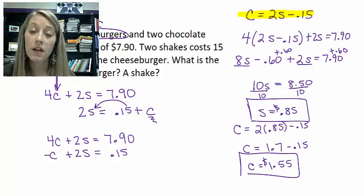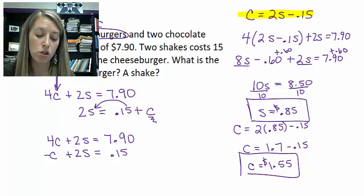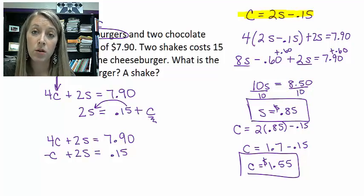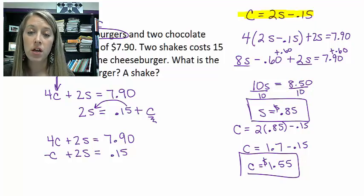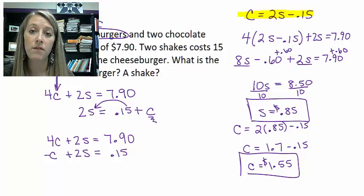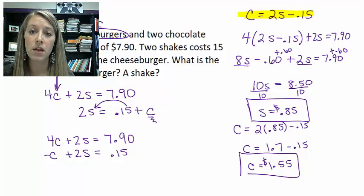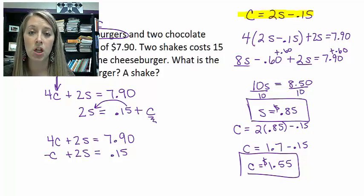If you want to make sure your math is correct, you can substitute these values back into the original equation or put them back into the word problem to see if they make sense — and they do in this case. So our final answers are: a shake costs $0.85 and a cheeseburger costs $1.55. This finishes up solving systems of equations by substitution or elimination method, with verification using the graphing method either by hand or with a graphing calculator.